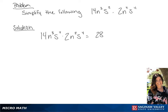Now we're going to add the exponents. So we have n to the 3 plus 2, and s to the power of 2 plus 4. So our final answer is going to be 28n to the fifth power s to the sixth power.